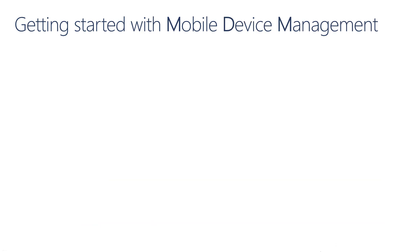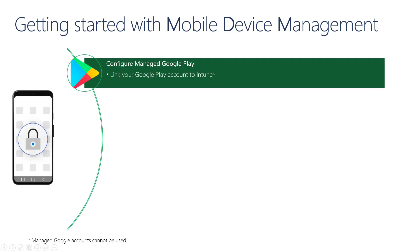These are the steps for enabling mobile device management for Android devices in Intune. The first step is to configure a managed Google Play account. We recommend creating a new Gmail account and setting the backup email to a group in your IT department. You may also want to consider enabling two-factor authentication for increased security while adding additional owners to maintain redundancy.